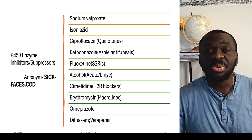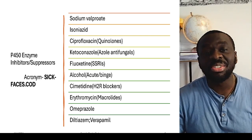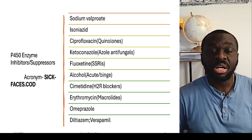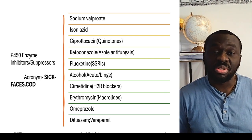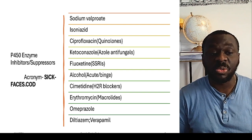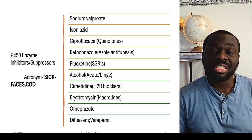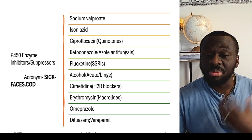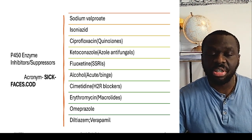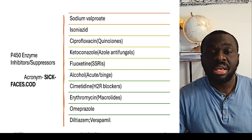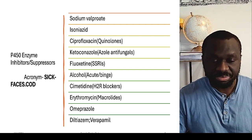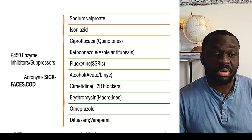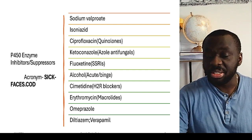Omeprazole is a commonly prescribed medication — a lot of times patients come with gastritis-type symptoms and we prescribe lansoprazole or omeprazole. It's very important to know that omeprazole has a P450 inhibitory effect. We need to be thinking about that when we're prescribing some of these commonly prescribed medications. Diltiazem and verapamil — the cardiac medications — can also have this P450 inhibitory effect.